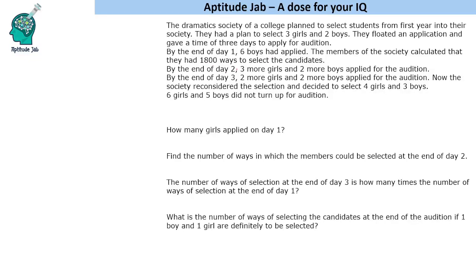At the end of Day 2, 3 more girls and 2 more boys applied for the audition. At the end of Day 3, 2 more girls and 2 more boys applied. The society then reconsidered the selection criteria and decided they will select 4 boys and 3 girls for the society.